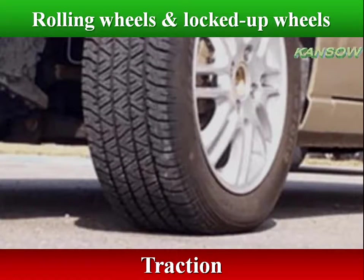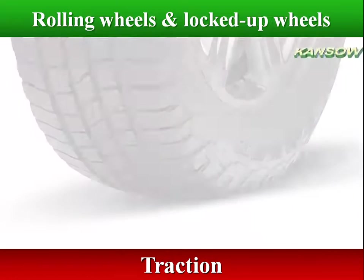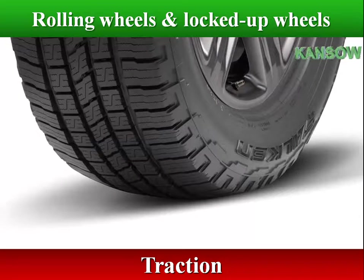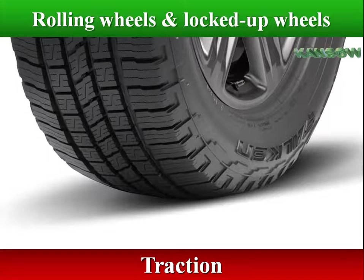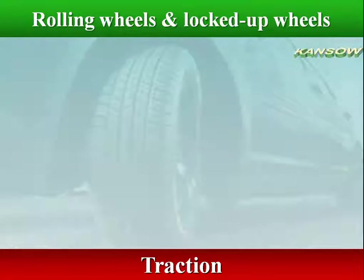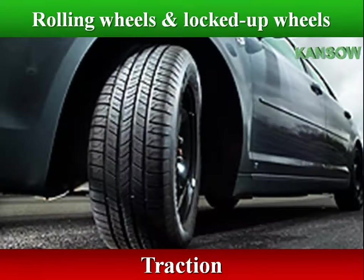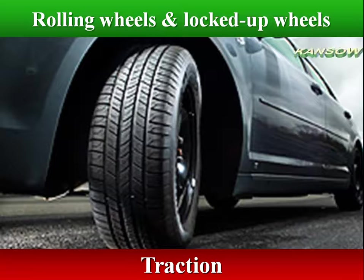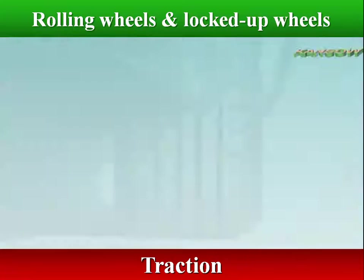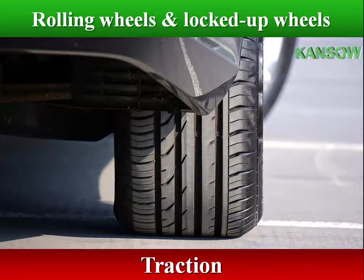Traction between the tires and road will slow your vehicle, and also enables your vehicle to turn left or right when the front wheels turn. Traction between the tires and the road does not remain constant — as speed increases, traction decreases. With decreased traction, the possibility of skidding or sliding increases.